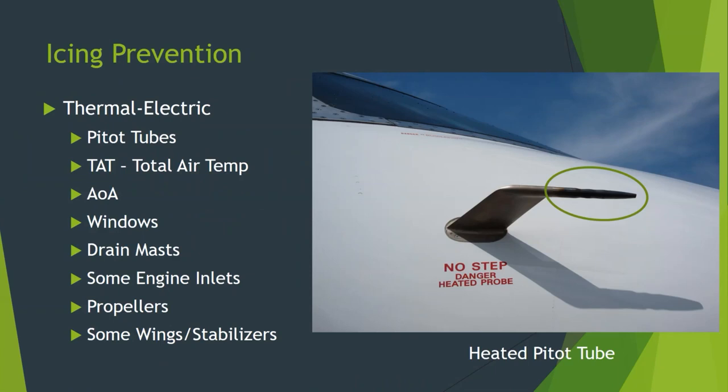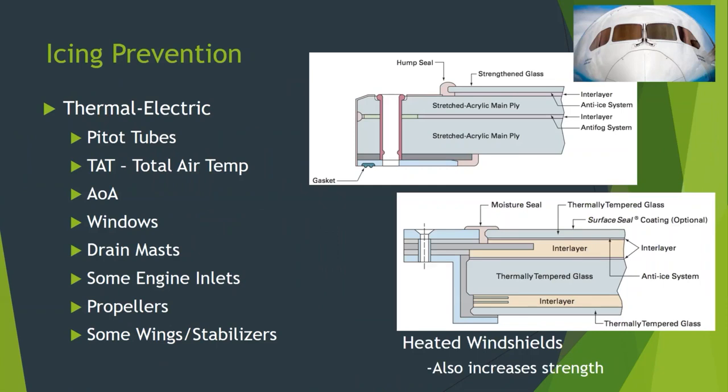The Boeing 787 is almost all thermoelectric, including the wings and stabilizers. The heated windshields are multiple layers of either acrylic or strengthened glass, or some combination of the two, with a layer of anti-ice heating right below the outermost surface. The thermally tempered or strengthened glass is the outer layer exposed to the airstream. The inner layers of acrylic or polyurethane are well insulated from the anti-ice system, which warms that outer glass. The inner surface is kept clear of fog using air.